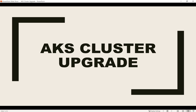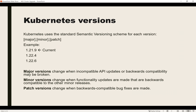Hello, my name is Shalander Chaudhary and in this video I'll show how to upgrade an AKS cluster. Kubernetes uses standard semantic versioning — major, minor, and patch. As you can see on screen, the current version running on our AKS demo cluster is 1.21.9.